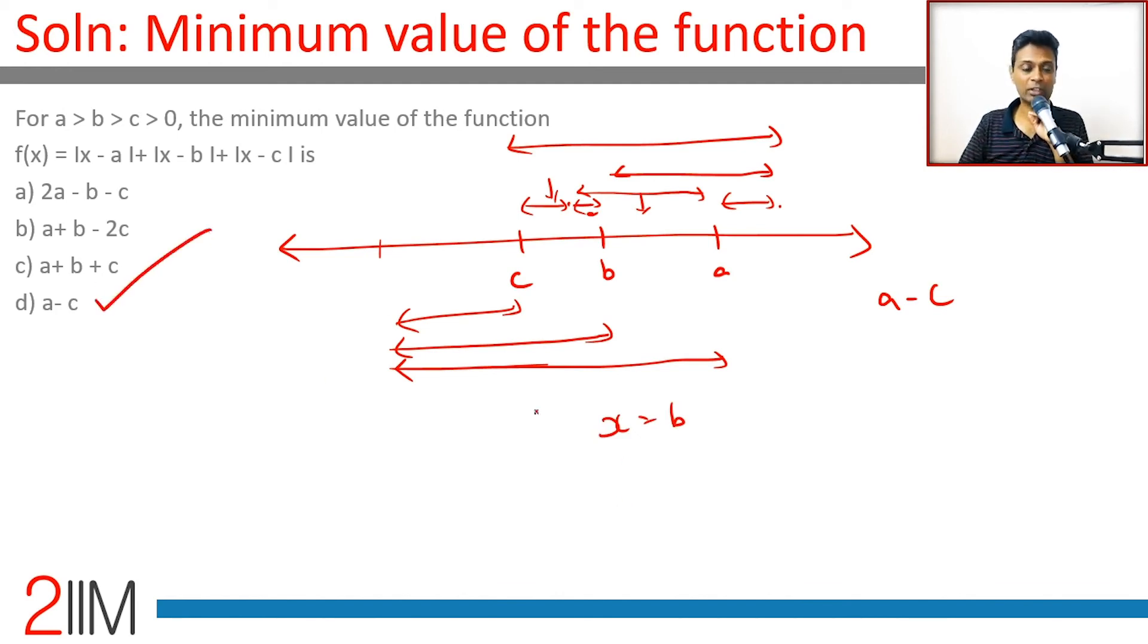but a - c. This is the answer you're looking for! Beautiful, beautiful question! The minimum value of the function is a - c, and that happens when x = b.